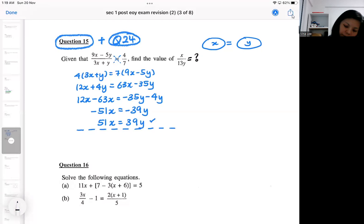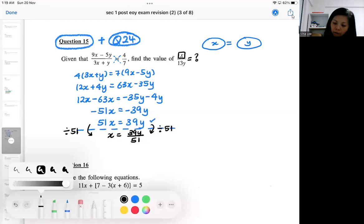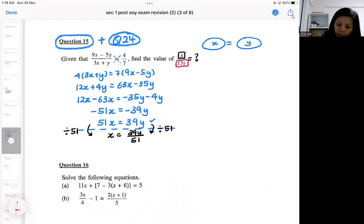So method one will be something like this. So the first method, you need to isolate to get one X. So if you want to get one X, you divide by 51 on both sides. Okay, then after that, I need 13Y. So I need 13Y here.